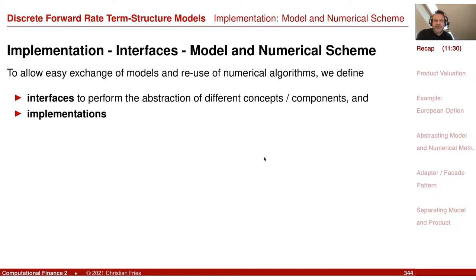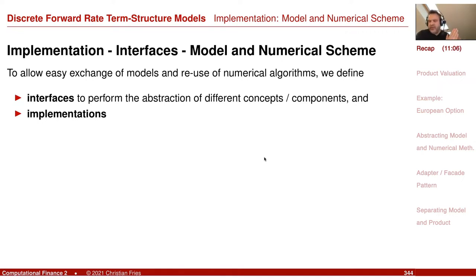Our discussion in the last session was a lot about how do we cut our methodologies — the mathematical aspects, generation of random numbers, time discretization — into components and implement them in the computer. The major tool in doing this cutting is the definition of an interface. An interface defines what can be done with something, and implementation defines how it is done.